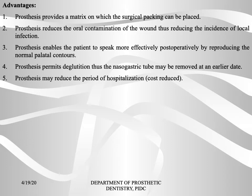The advantages of the surgical obturator include: it provides a matrix on which surgical packing can be placed; it reduces oral contamination of the wound, thus reducing the incidence of local infection; it enables the patient to speak more effectively postoperatively by reproducing normal palatal contours; it permits deglutition, allowing the nasogastric tube to be removed at an earlier date; and it helps reduce the period of hospitalization.